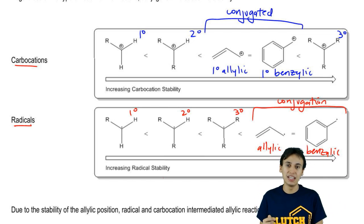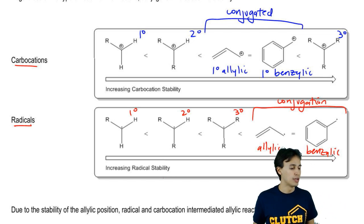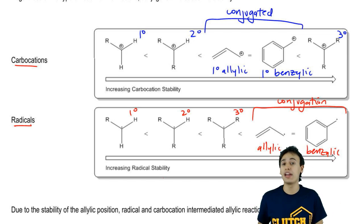Regardless of the type of intermediate, it's always going to make it more stable. But as we compare and contrast carbocations versus radicals, we see that radicals benefit even more from conjugation than a typical carbocation would.